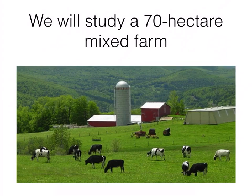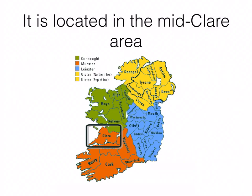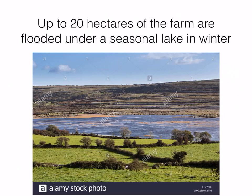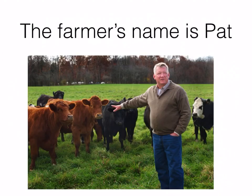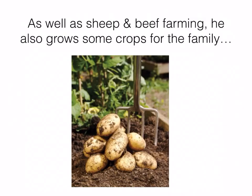We're going to study a mixed farm located in County Clare. It's 70 hectares - remember the size of the farm, because the more detail you have in your answer the better. Up to 20 hectares of the 70 can be flooded in winter due to excessive rainfall. It's a mixed beef and sheep farm, and the farmer's first name is Pat. So: a mixed farm, 70 hectares, County Clare, run by a farmer called Pat.